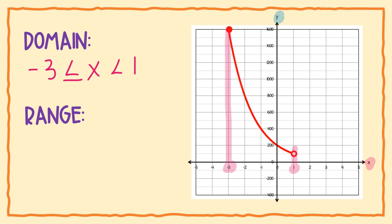The top is at 1600, which is easy to read. At the bottom, there's no number labeled, so you have to use the graph's scale. If two squares equal 200, then one square equals 100. So our range is 100 is less than y — because that circle is open — and the top circle is colored in, so y is less than or equal to 1600.